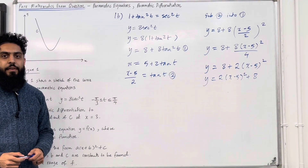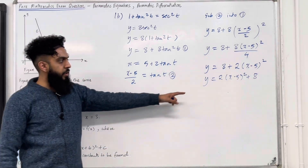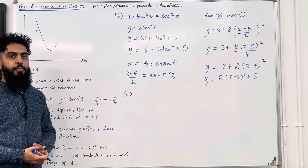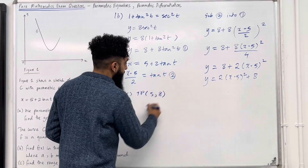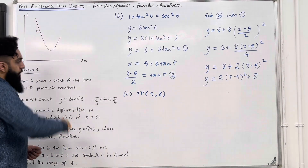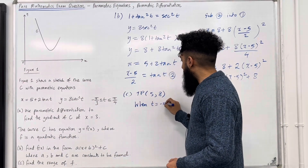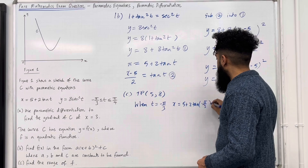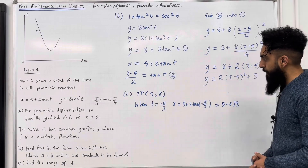Let's have a look at part C. The Cartesian equation y equals 2(x minus 5) squared plus 8 is in completed-square form, so we can deduce the turning point of the quadratic, which is (5, 8). Now substituting t equal minus pi over 3 into the parametric equations: x equals 5 plus 2 tan(minus pi over 3), which gives x equals 5 minus 2 root 3.